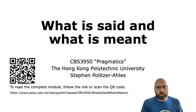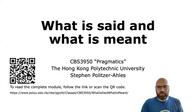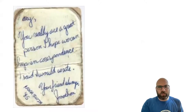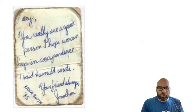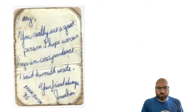For this module we're going to talk about the pragmatic concept called 'what is said and what is meant.' First let's refresh our memory about what we talked about in the previous module. Remember last time we looked at this letter that Jonathan wrote to Mary where he wrote, 'Mary, you really are a great person, I hope we can keep in correspondence,' and then he put that letter in a bottle and threw it into the ocean.